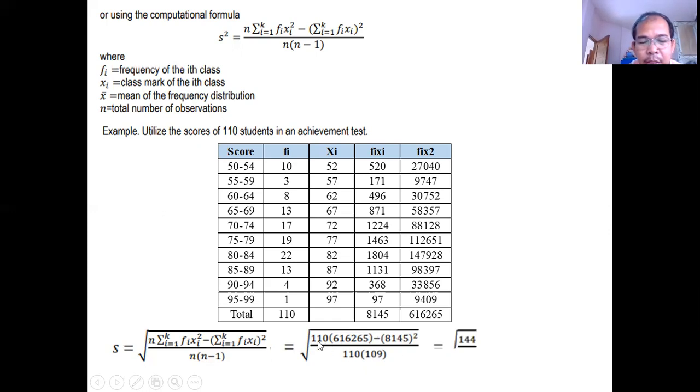Then, i-compute ito. Remember, multiply muna. Then, this one, 8145, raised to the power of 2. So, 1448125. Over 110 divided by 10 times 109. Then, take the square root. It's 10.99. Therefore, the sample standard deviation of the 110 students presented in frequency distribution table is 10.99.